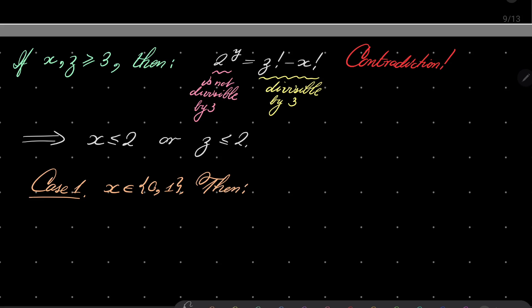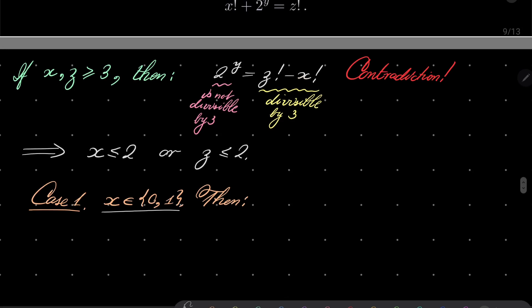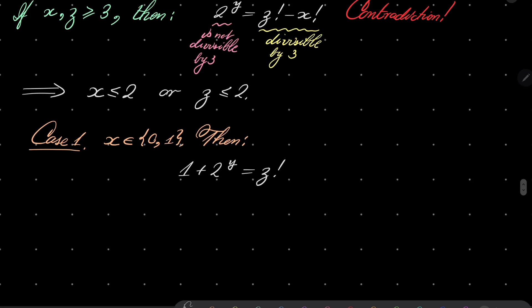And what then? Then we have the following equation. I consider these cases together because 0 factorial and 1 factorial are the same. So we have 1 plus 2 to the power of y equals z factorial. And now let's notice that we can do the following. Let's consider the possible values of maybe y. Well, if y equals 0, then we have 2 equals z factorial, so z equals 2. We have found a solution.